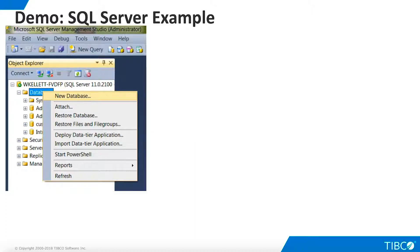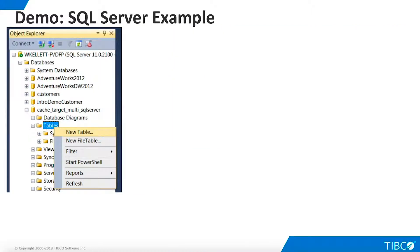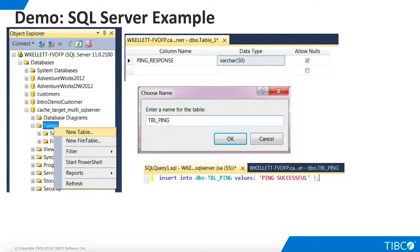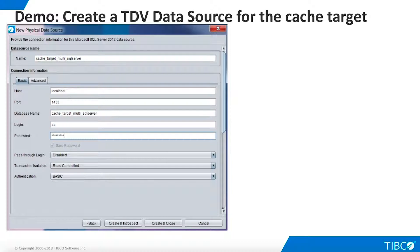We have successfully set up multi-table caching with a MySQL target. But we can learn even more about multi-table caching by using another target. Let's try Microsoft SQL Server. In SQL Server Management Studio, create a new database. A new database is not required, but it keeps our demo isolated. Name the database and click OK. One special consideration for SQL Server is that the cache target database must have at least one table on it already before we can introspect it successfully. Create a new table, create a column, name the table, and add a row of data for good measure. Now we have a database that is ready to be used as a cache target.